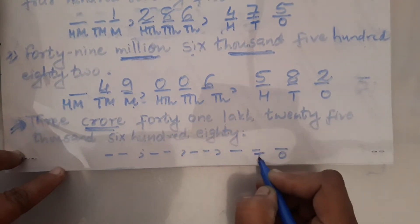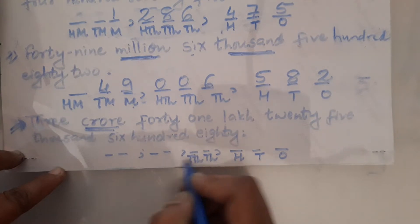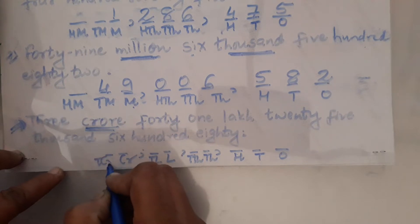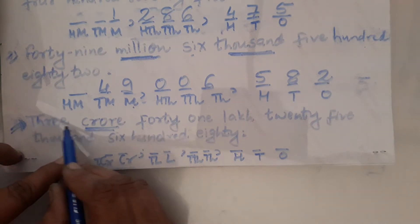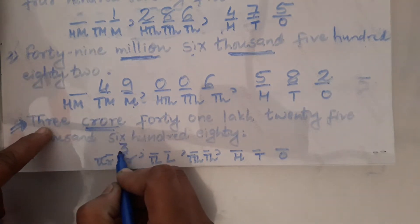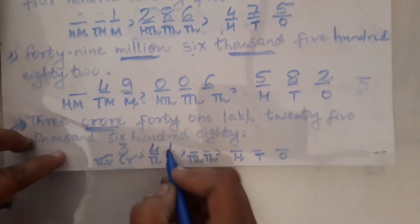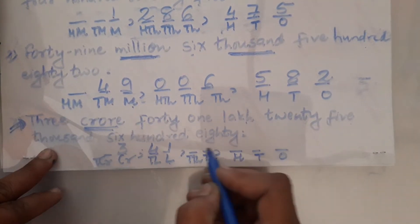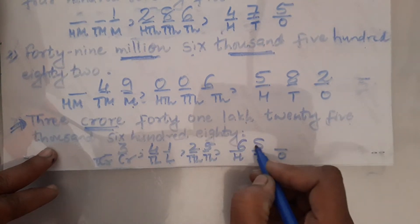The places are: 1s, 10s, 100s, 1000, 10,000, lakh, 10 lakh, crore, and 10 crore. This is 3 crore — how to write 3 in 2 digits? That is 03. Then 41 in the lakhs place, 25 in the thousands place, and 680.